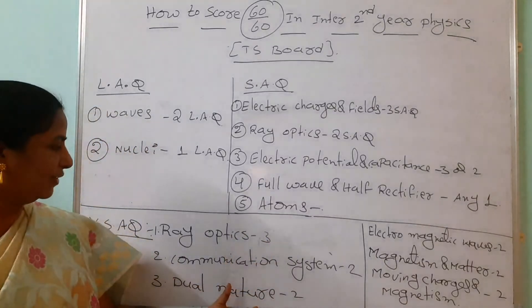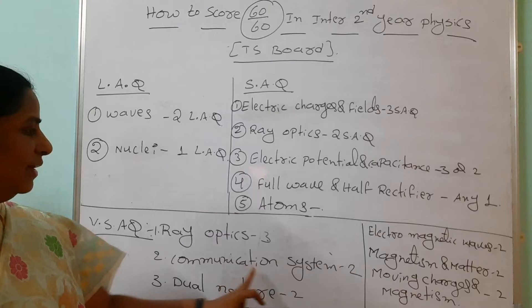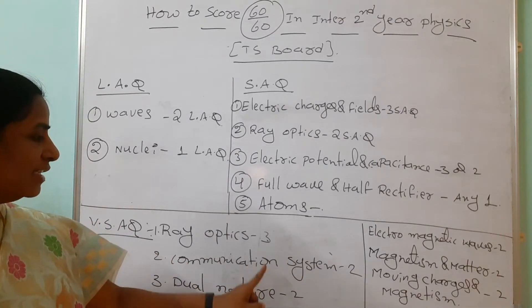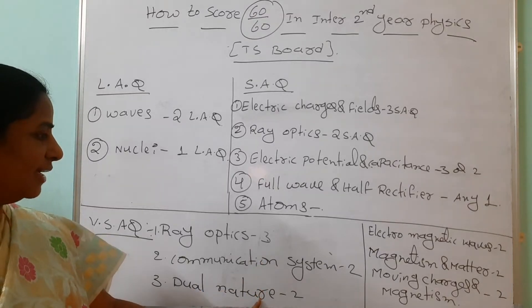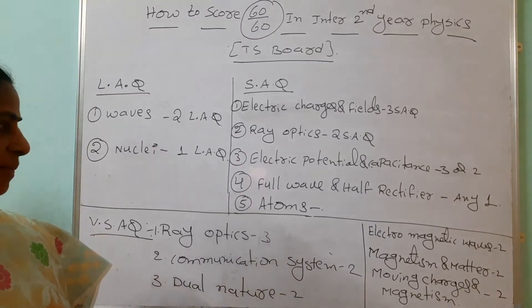Now come to very short answer question side. Ray optics: three VSAQs. Communication system: two VSAQs. Dual nature - see, these two are very small chapters. Here eight VSAQs are there, here eight VSAQs are there. In these two, we are expecting four VSAQs. So don't leave these two chapters.